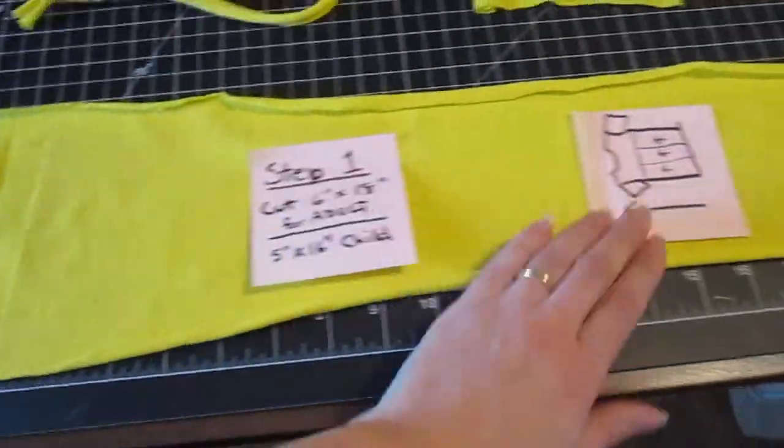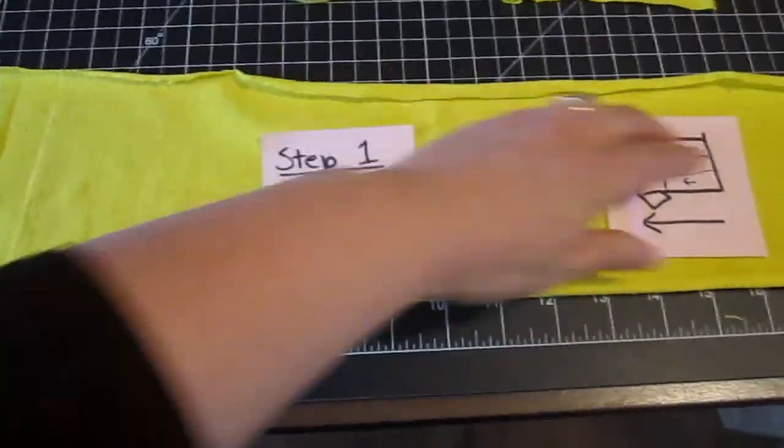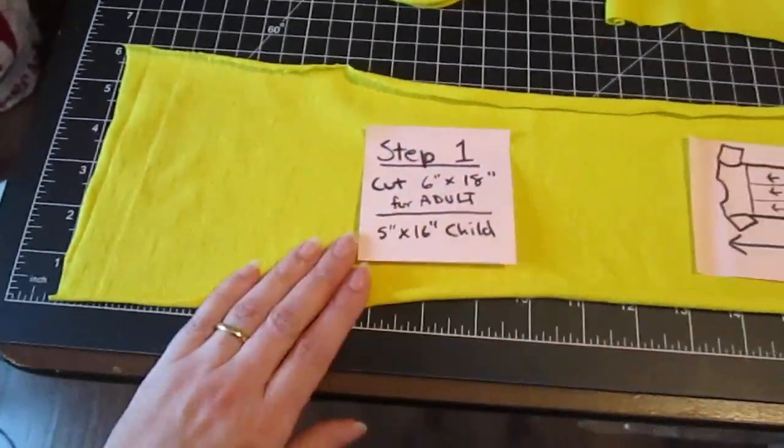For the adult you want six wide by 18 inches long. For a child it would be five inches by 16 inches long.